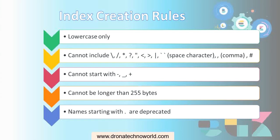There is also a limitation on the number of bytes — an index name can have a maximum of 250 bytes. If you are using multibyte characters, make sure it does not exceed 250 bytes. Finally, index names that start with a dot are reserved for internal purposes, so creating custom indices with a dot prefix is deprecated and not allowed.